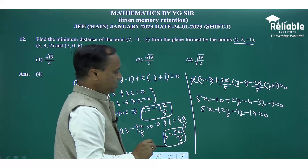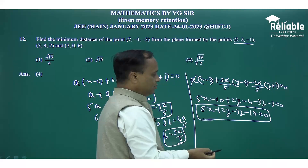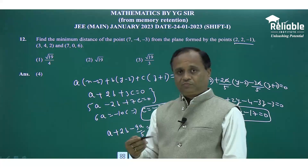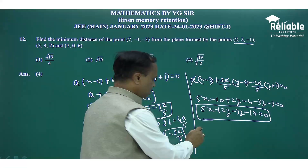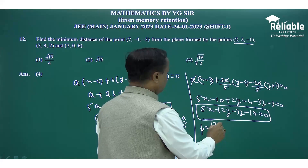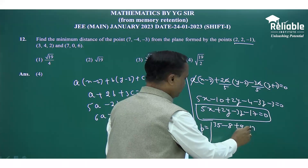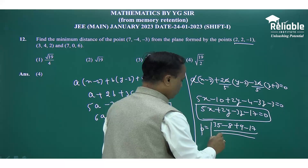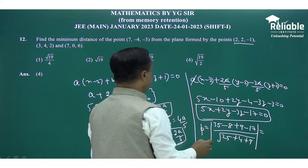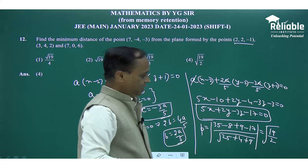So the plane equation is 5x + 2y − 3z − 17 = 0. Now we find the perpendicular distance from the point (7, −4, −3) to this plane: distance = |5(7) + 2(−4) − 3(−3) − 17| / √(25 + 4 + 9) = |35 − 8 + 9 − 17| / √38. When you simplify, you get the answer given in the fourth option, that is √(19/2).